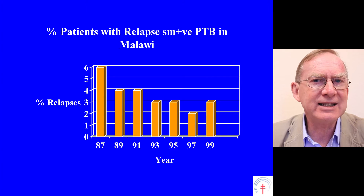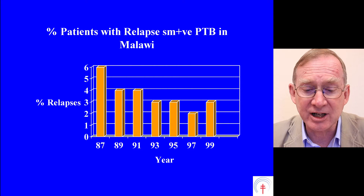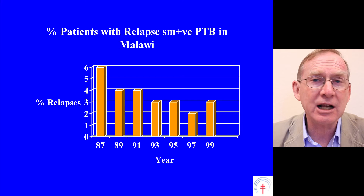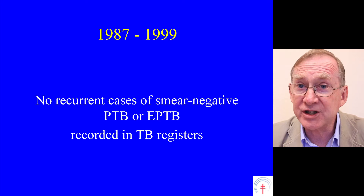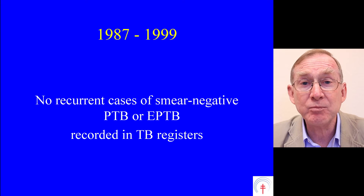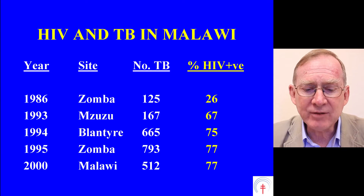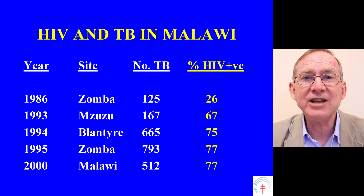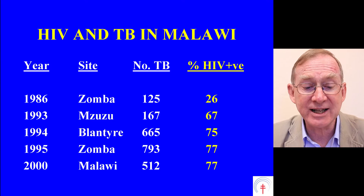This shows us data from 1987 to 1999 looking at the proportion of all patients registered nationally who had relapse smear positive pulmonary tuberculosis. We started at 6% and then declined and stabilised at around 2% or 3%. During this 12 years, there were no recurrent cases of smear negative pulmonary TB or extra pulmonary TB recorded in the TB registers. However, during this period, studies done at the district and country level in Malawi showed HIV prevalence in TB patients rose from 26% in 1986 up to 77% in the year 2000.